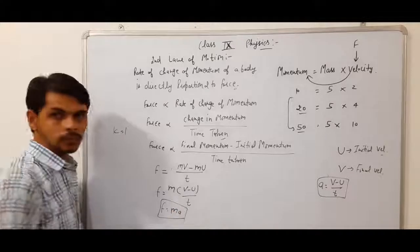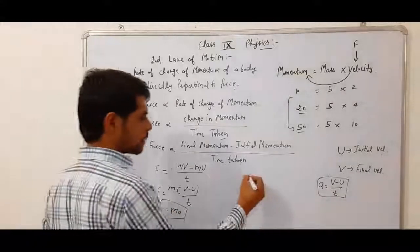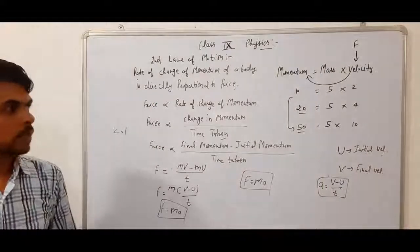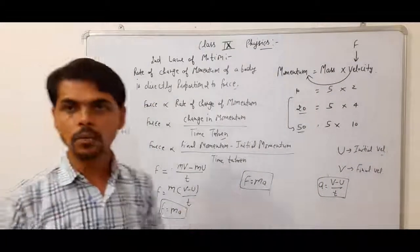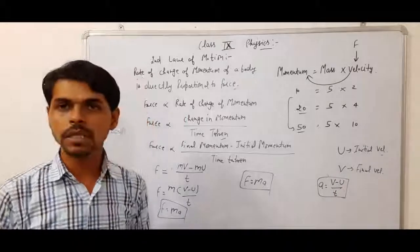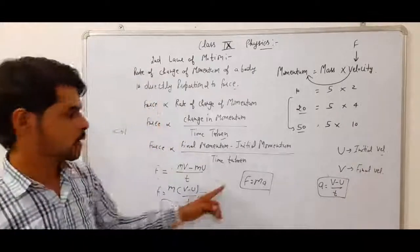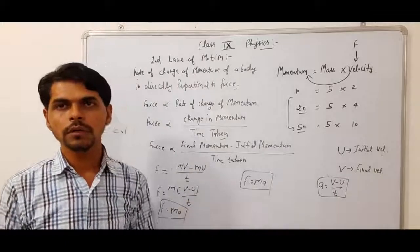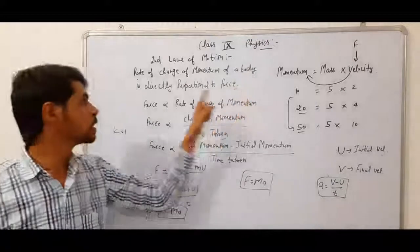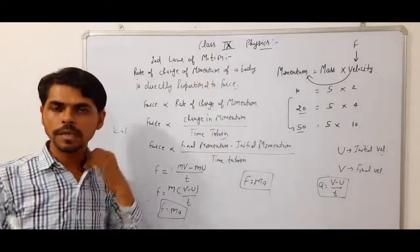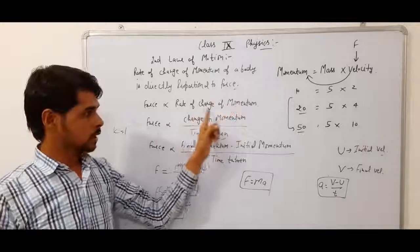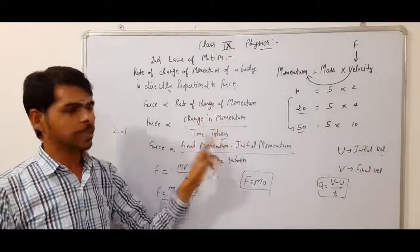So F = ma. This is the mathematical formula for the second law of motion. It means force equals mass into acceleration. To summarize: the rate of change of momentum depends on force, and change in momentum divided by time taken gives us the force.